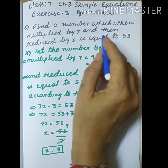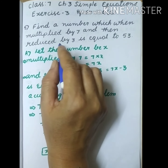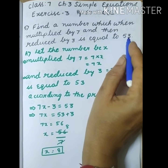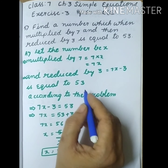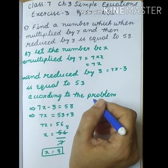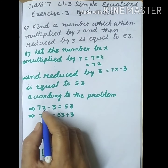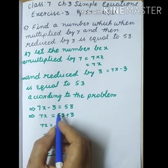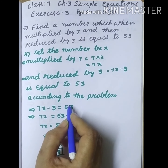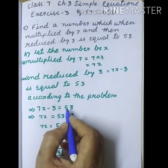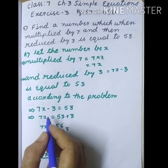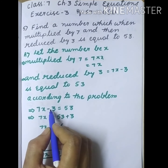Then reduced by 3 and is equal to 53, so we are getting 53. According to the problem, 7x minus 3 equals 53. Here we have to find the x value — x value means we have to find the number.